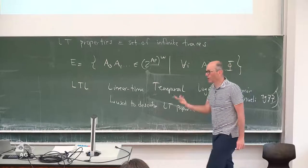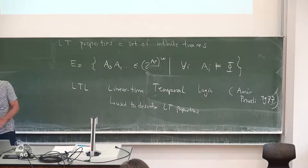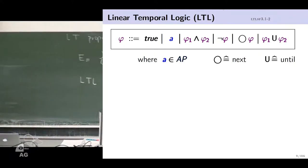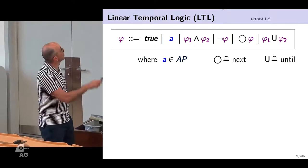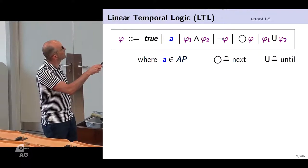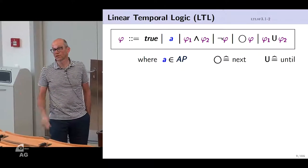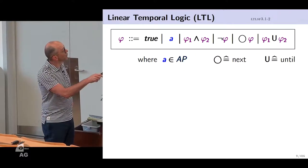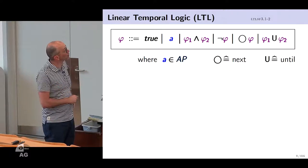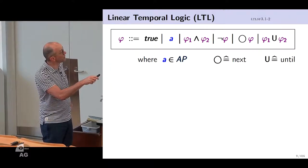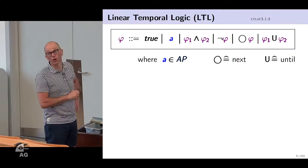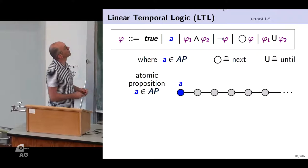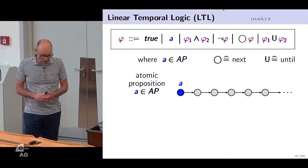So let's start with the syntax of Linear Temporal Logic. LTL contains ordinary boolean logic: true, atomic propositions, conjunctions, and negations. Then we have two new ingredients: 'Next' — intuitively meaning in the next state phi holds — and 'Until' — meaning phi one holds until at some position phi two holds. The interpretation of this logic is given over infinite traces.